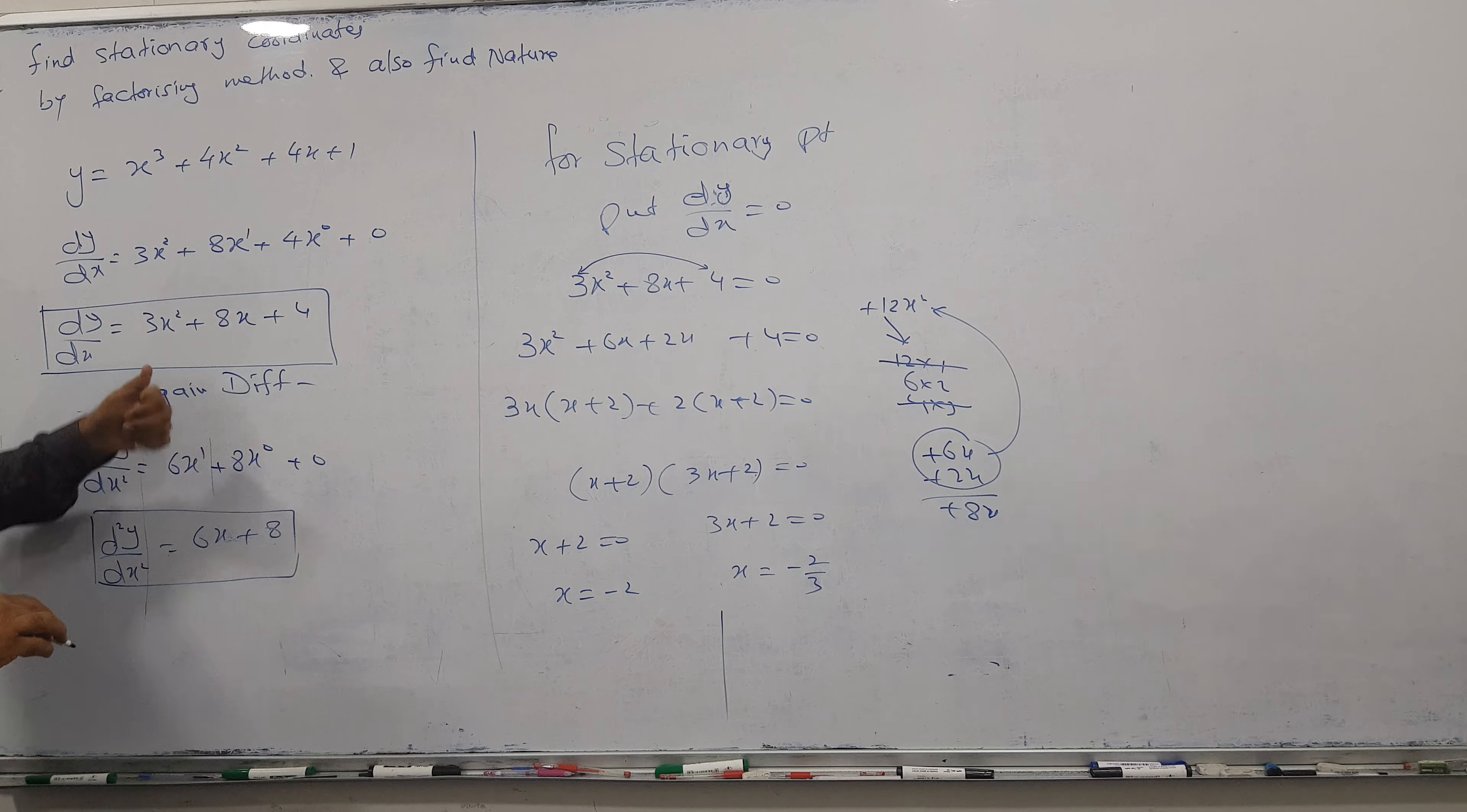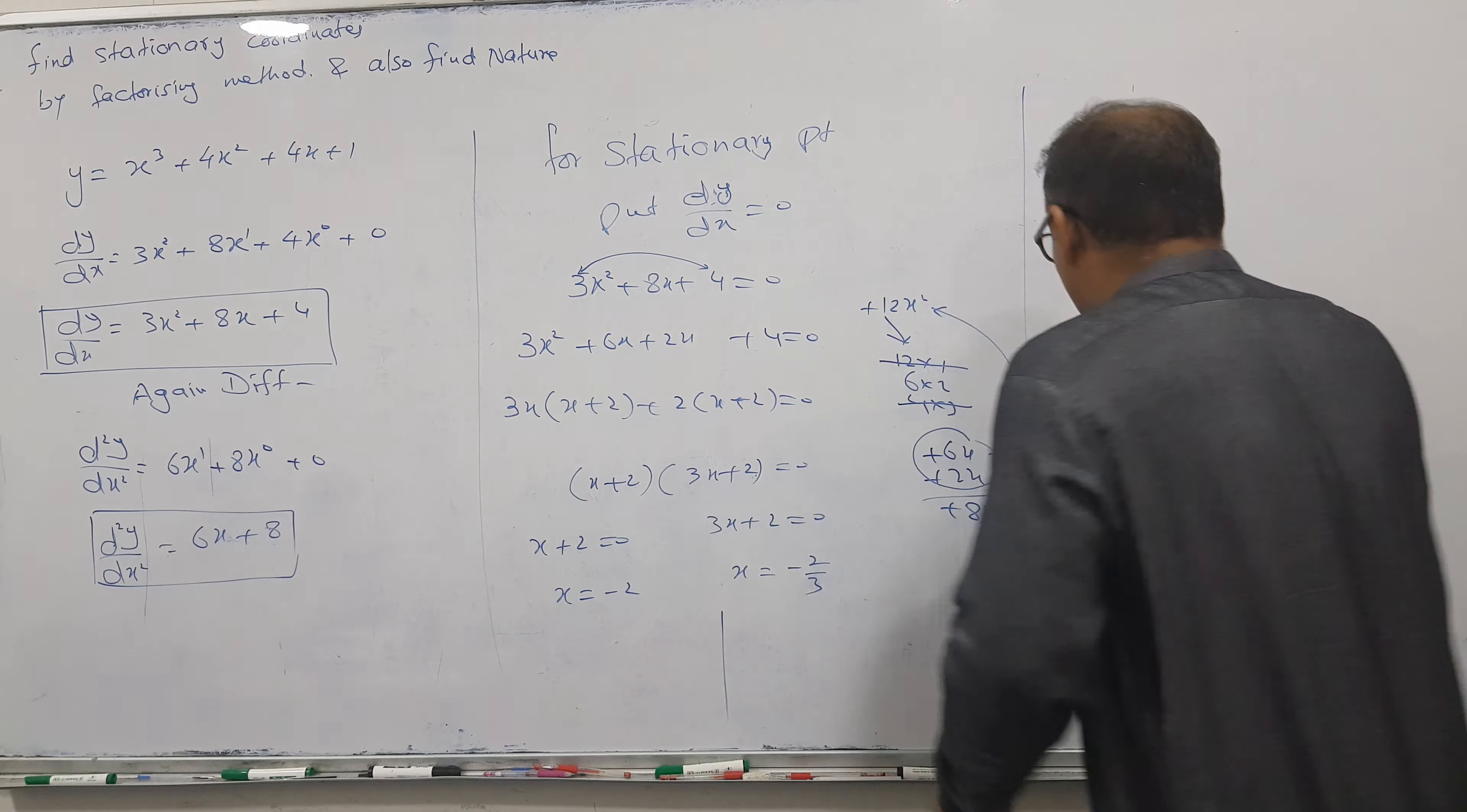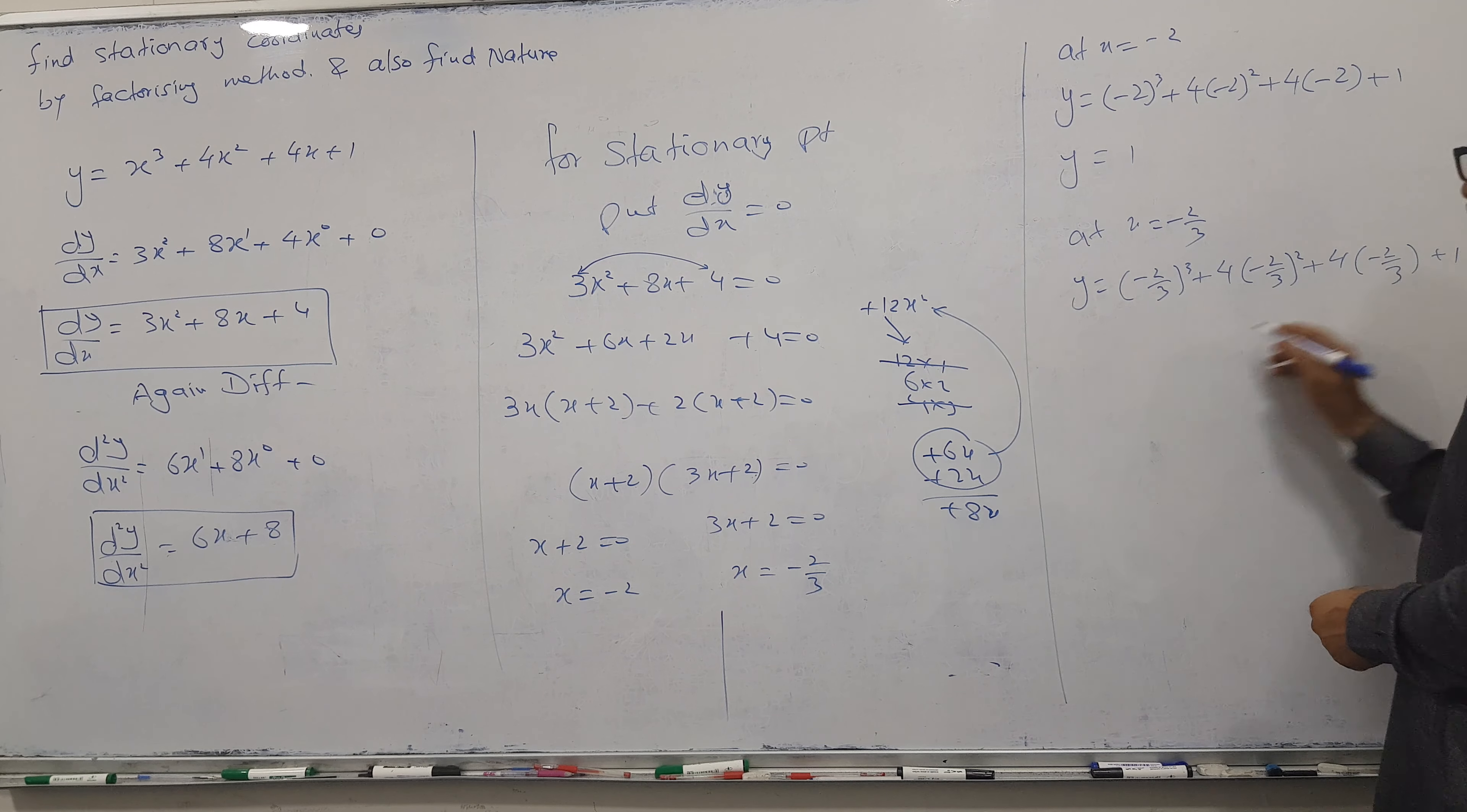I will put both values one by one in the equation to get the answer. Let's find y-coordinates. At x = -2: y = (-2)³ + 4(-2)² + 4, which gives 1. At x = -2/3, let's put in the equation and see what answer comes. Please check and give me the answer, then I'll go for nature.